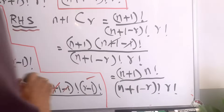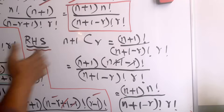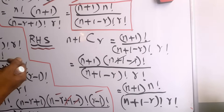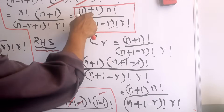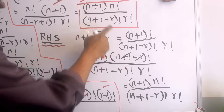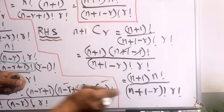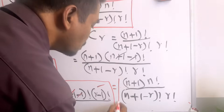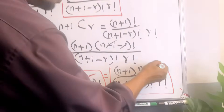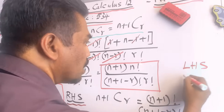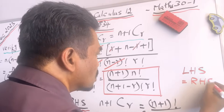Now we can see the final term we got on the left-hand side: (n+1) times n factorial over (n+1-r) factorial times r factorial. Both sides are equal, so we conclude that this identity is true and left-hand side equals right-hand side. We have proved it successfully.